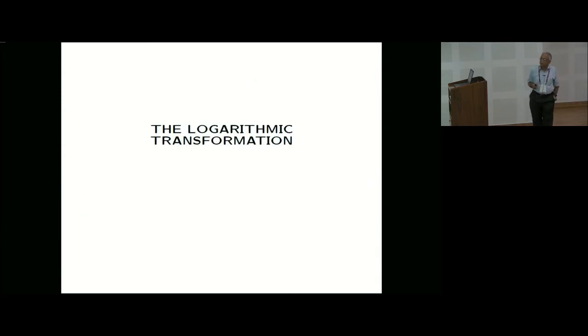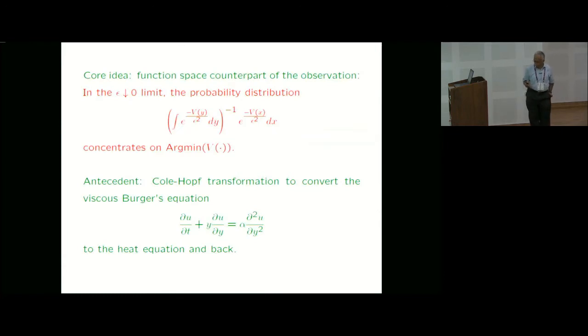Let me now talk about logarithmic transformation. The idea is very simple. I am now considering a probability distribution on some Euclidean space. Suppose it's of this form e to the minus v by epsilon square. Then as epsilon goes to 0, it will concentrate on the minimizer of v, which is kind of obvious. What we are doing essentially is the function space counterpart of this kind of thinking. The key thing is that the idea is you are reducing the concentration issue to a non-linear minimization problem. The corresponding thing in function space will be that it's a control problem. Not an optimization problem, but since it's a dynamical system, you reduce it to a control problem.